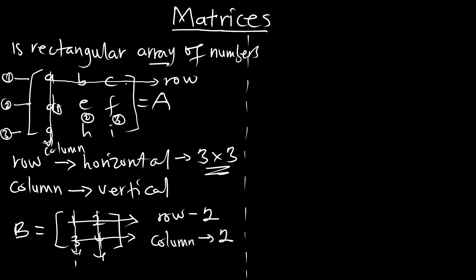Now let's see how we can list the members of a matrix. We are going to always list the members as row first, column second. So if I'm going to write a three-by-three matrix, we number the rows this way and we also number the columns.